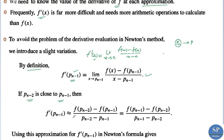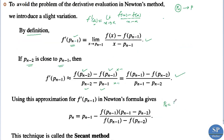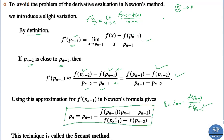If p_{n−2} is close to p_{n−1}, then f'(p_{n−1}) is approximately equal to [f(p_{n−2}) − f(p_{n−1})] / [p_{n−2} − p_{n−1}], which equals [f(p_{n−1}) − f(p_{n−2})] / [p_{n−1} − p_{n−2}]. Now, Newton's formula gives p_n = p_{n−1} − f(p_{n−1}) / f'(p_{n−1}). Replacing f'(p_{n−1}) by this approximation, we get: p_n = p_{n−1} − f(p_{n−1}) · (p_{n−1} − p_{n−2}) / [f(p_{n−1}) − f(p_{n−2})]. This method is called the secant method.